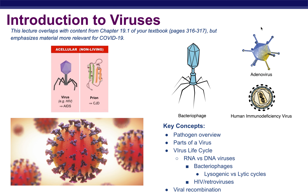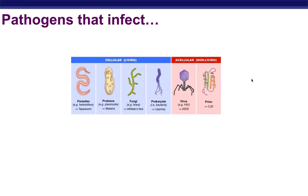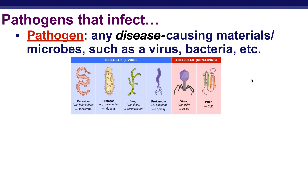So to talk about viruses, we need to know what a pathogen is. A pathogen is any disease-causing material or microbe — meaning small organism — such as a virus, bacteria, etc.